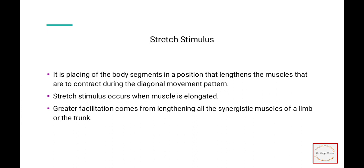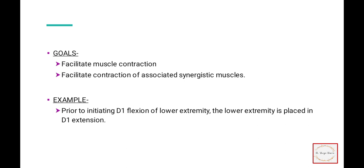There are two things: stretch stimulus and stretch response. Stretch stimulus is the placing of a body segment in a position that lengthens the muscles that are to contract during a diagonal movement pattern. For example, if performing shoulder flexors, the shoulder flexors must be kept in elongation. Greater facilitation comes from lengthening all the synergist muscles of a limb or trunk. Goals are to facilitate muscle contraction and facilitate contraction of associated synergistic muscles. For example, to use D1 flexion of the lower extremity, place the lower extremity in D1 extension so that the agonist muscles are in the lengthening position and the stretch stimulus activates them.